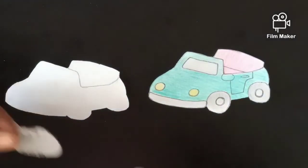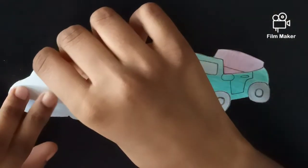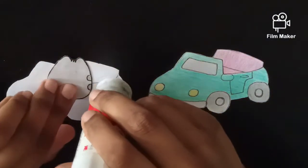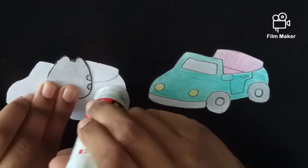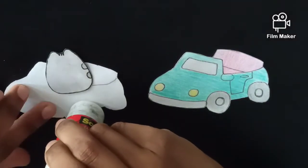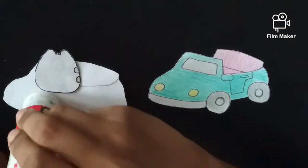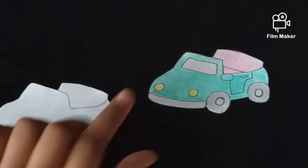Take your character and place it on top like this. Apply glue on the base of the car and leave just enough space for your character to slide in. Stick both sides together.